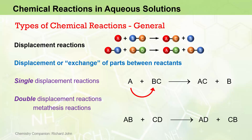For the double-displacement reaction, we saw that one part of a reactant A displaces part of another reactant C to produce the compound AD, while at the same time, another part of a reactant B displaces the second part of a reactant D to produce the compound CB.